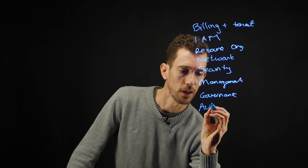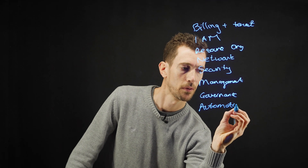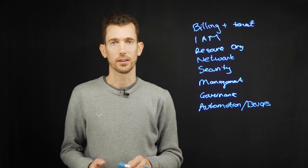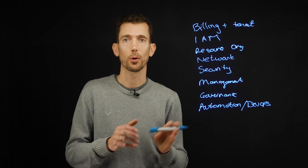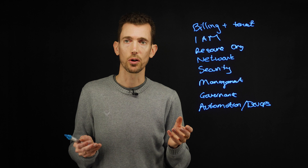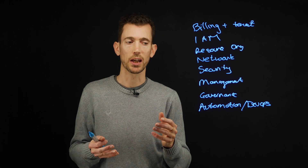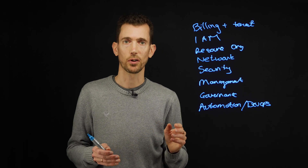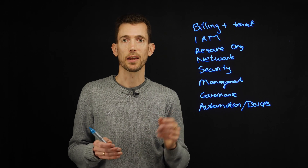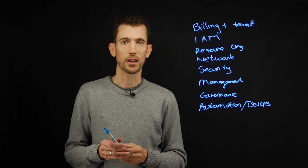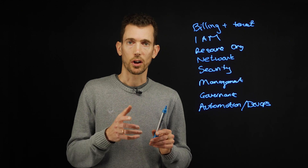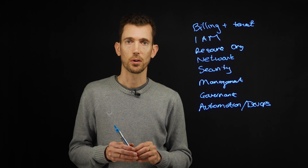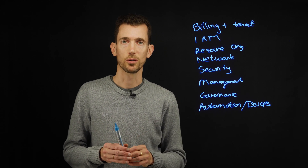And finally, automation and DevOps. This is really how you can unlock scaling. When you first start it's quite easy — you've got a small amount of resources to manage. But as you grow, how do you keep that same pace? That's really where automation and DevOps can unlock the ability to scale up, do things faster, do things automatically, and take out that manual effort. So those are the eight areas that Microsoft's recommendations say we should focus on. There's a lot more information in the blog and Microsoft documentation, so I suggest you check there for more detail.